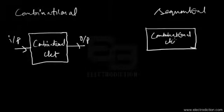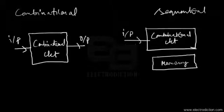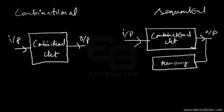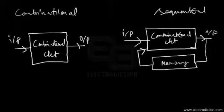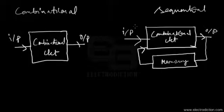In the case of a sequential circuit, the block diagram includes a combinational circuit combined with a memory element. There's an input, an output, and a feedback path from the output to the memory element, which feeds back into the combinational circuit. The sequential circuit stores the output states in memory.